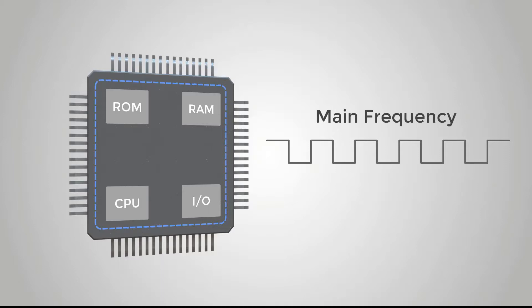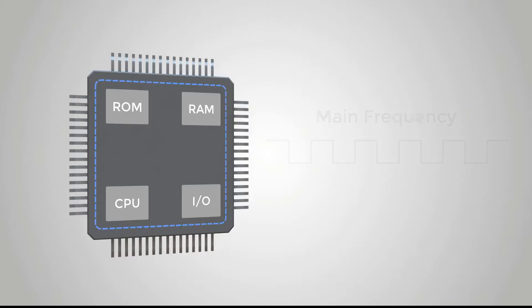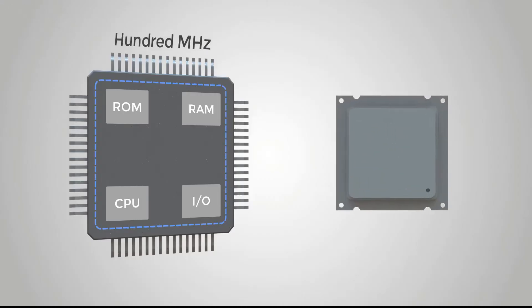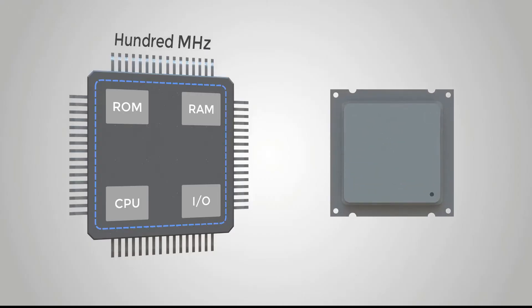The higher the main frequency, the higher the performance of the microcontroller. The frequency of a microcontroller is generally at the level of 100 MHz, while the frequency of a computer CPU is generally at the level of GHz.